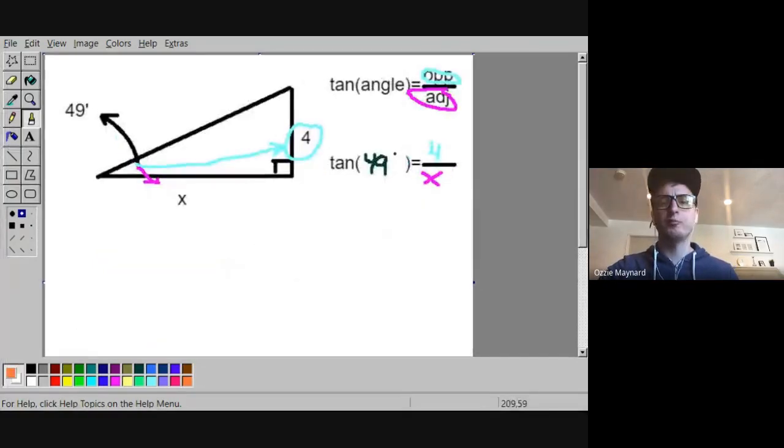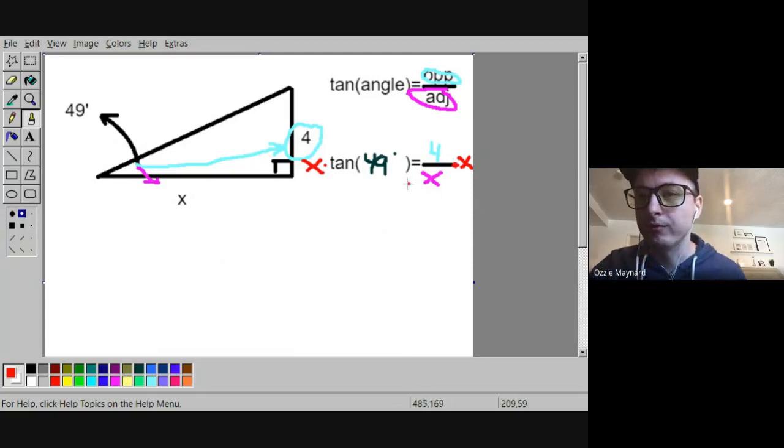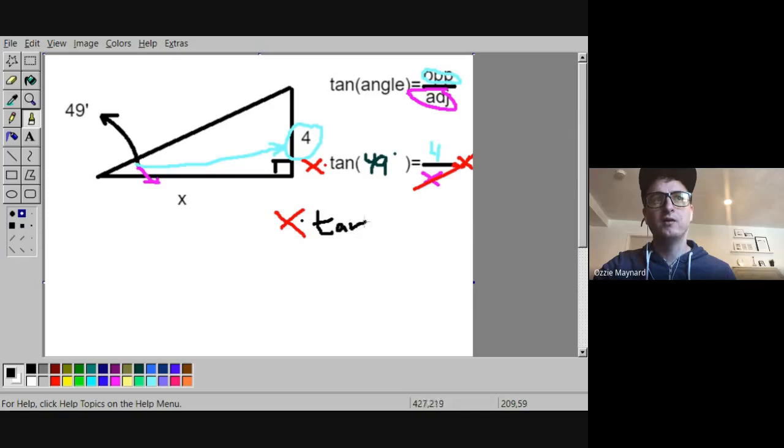So let's take a look at this previous example that we have here. Notice how we had 4 on top and x on the bottom. What I want to do is get x to be alone, so I'm actually going to have to multiply both sides by x. We had the equation by setting it up, we just have to solve. So cross off the x. The x is now on the left side. We have x times the tangent of 49 is equal to 4.